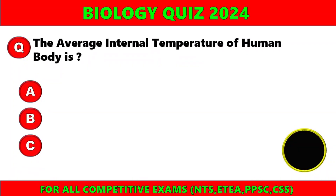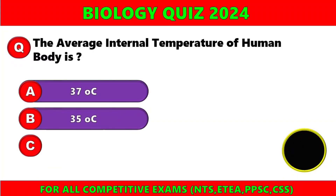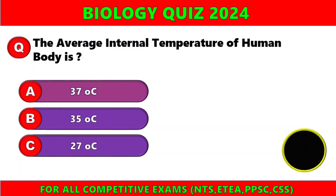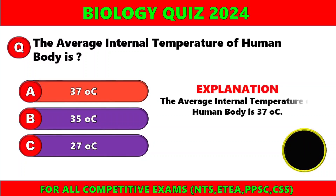The average internal temperature of the human body is a) 30 degrees centigrade, b) 35.5 degrees centigrade, c) 27 degrees centigrade. The right option is A. The average internal temperature of the human body is 37 degrees centigrade.